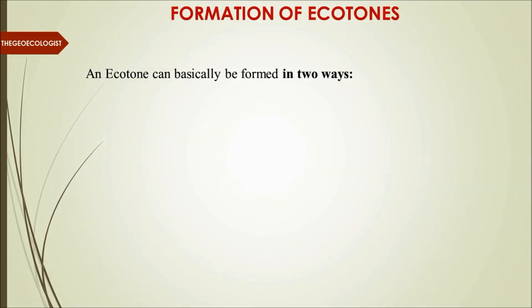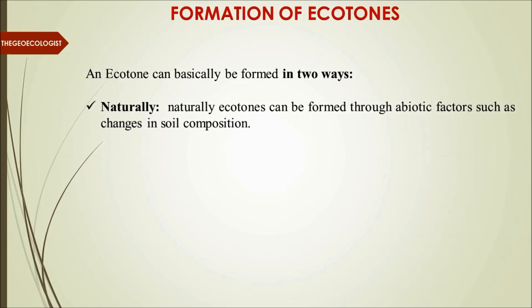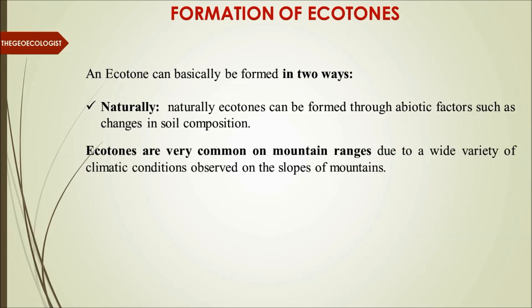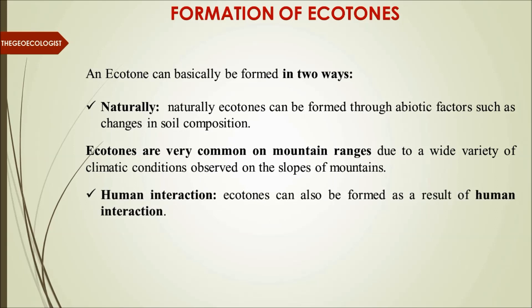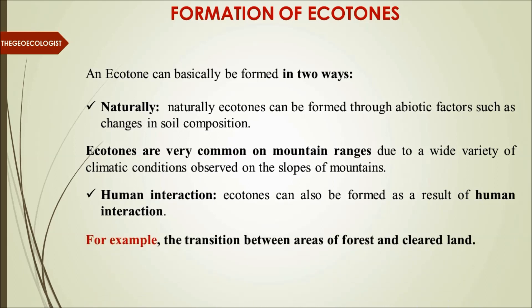Ecotones form in two ways. First, naturally through abiotic factors — the non-living factors of an ecosystem. Changes in soil composition can lead to ecotone formation. Ecotones are very common on mountain ranges due to wide variety of climatic shifts, and different flora and fauna appear on different slopes. Second, through human interaction — for example, the transition between areas of forest and cleared land, where a particular kind of flora and fauna exists.